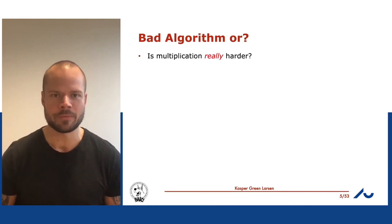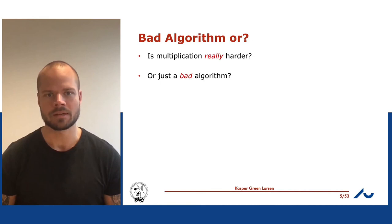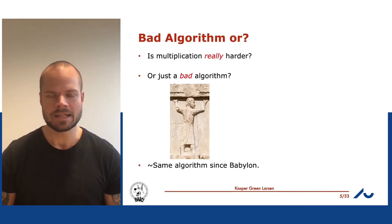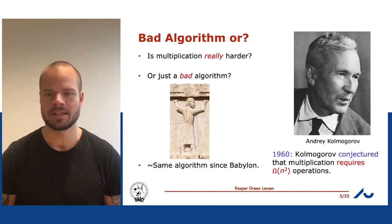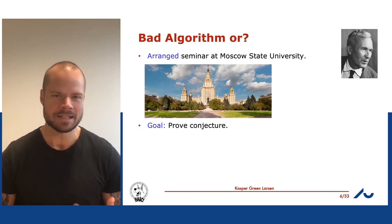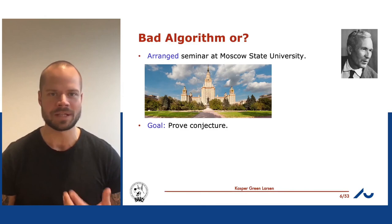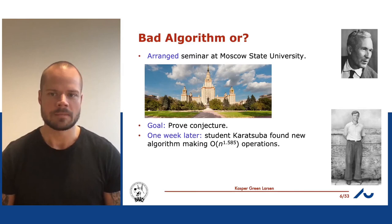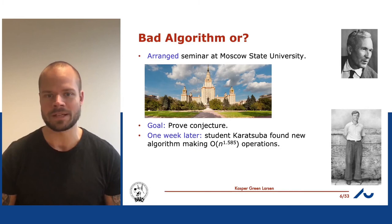Is multiplication really a harder problem, or is it just because we have a bad algorithm? The algorithm we use for multiplication is actually the same one used roughly since Babylon — thousands of years old — and it hadn't been improved since then. This led in 1960 the Russian mathematician Kolmogorov to conjecture that multiplying two n-digit numbers requires Ω(n²) operations. He arranged a seminar at Moscow State University to prove this conjecture, but just one week later, the student Karatsuba found a new algorithm doing only O(n^1.585) operations.